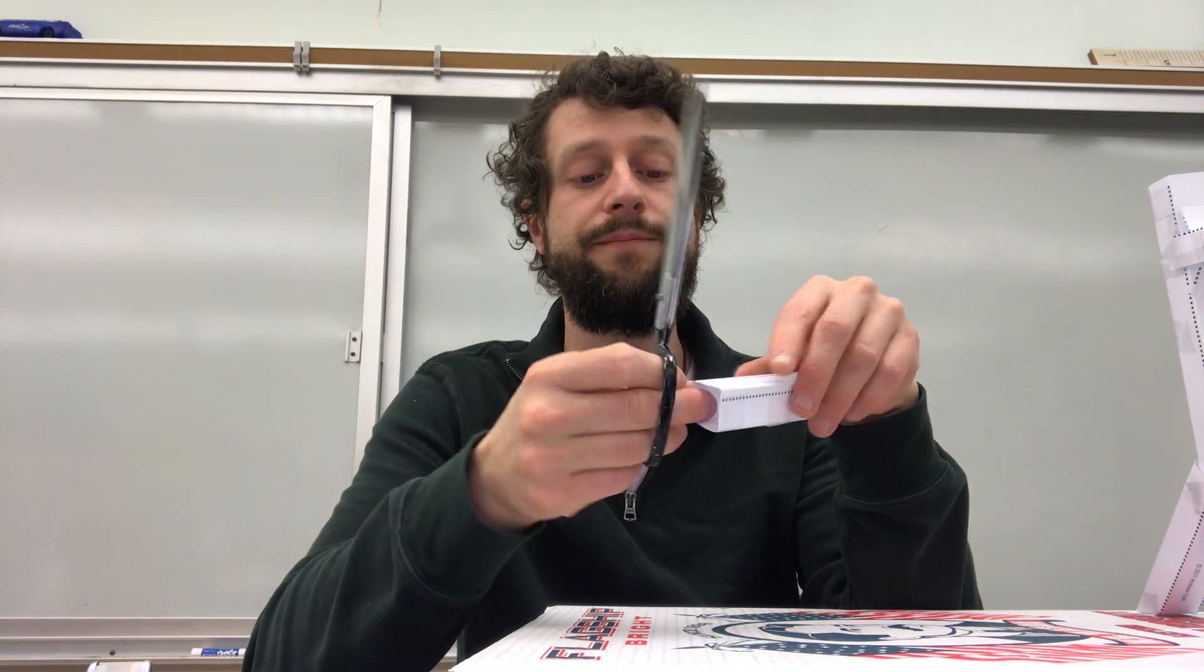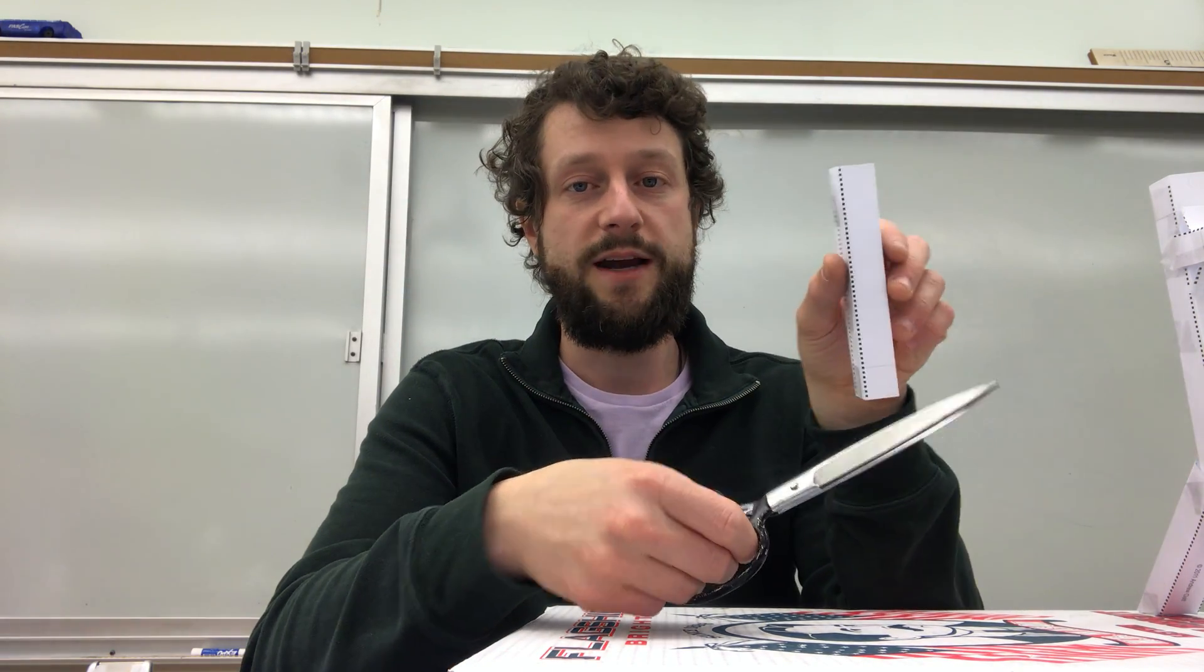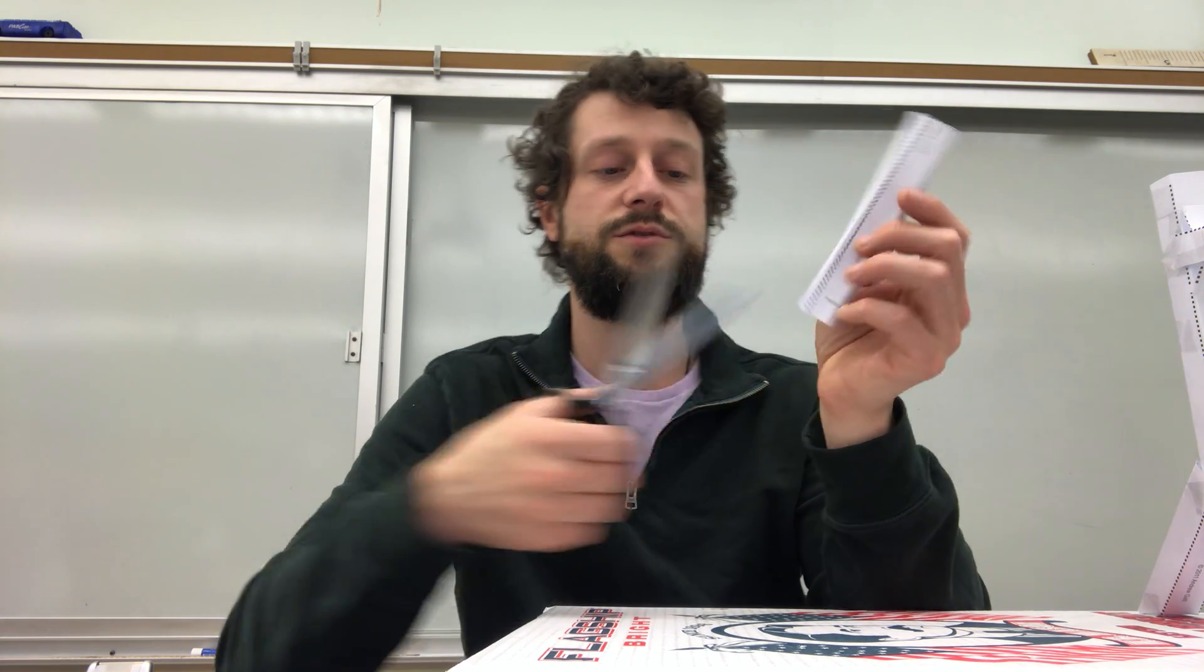Okay, so let's show you how to make a diagonal support. Take one of your columns, cut in half, however tall you want it to be. It doesn't really matter. And just take one side of it and snip the corner, not all the way, just enough to get a little flap like that.